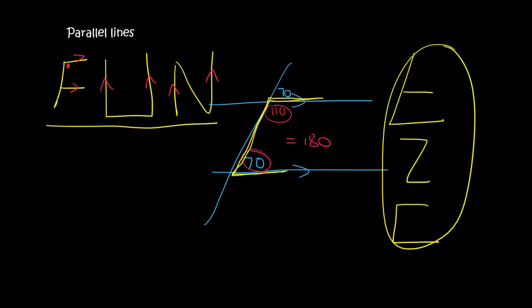So then these angles are always equal. These two over here always add up to 180. They are not equal, but then these ones are always going to be equal to each other.